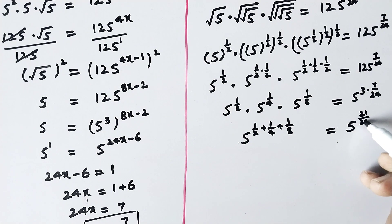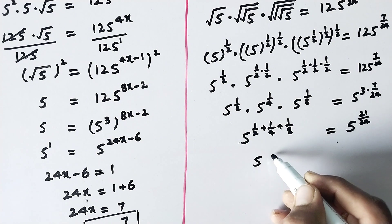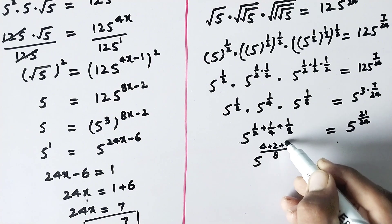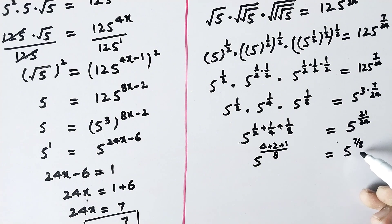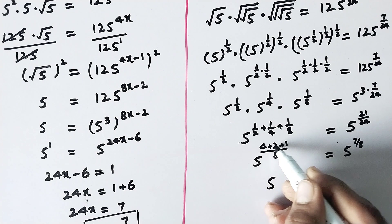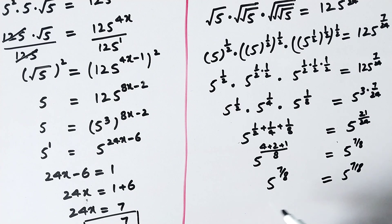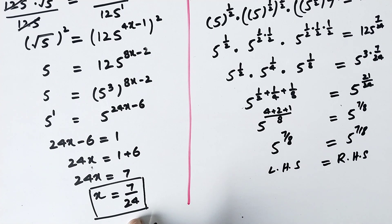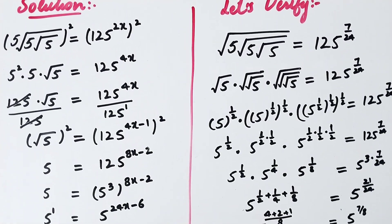Adding the powers on the left-hand side with LCD 8: 1/2 plus 1/4 plus 1/8 equals 4/8 plus 2/8 plus 1/8 equals 7/8. The right-hand side simplifies to 5 to the power 7/8 as well. Since the left-hand side equals the right-hand side, it is proved that x equals 7 over 24 is the correct answer. If you like the video, please hit the like button and subscribe to my channel for more videos. Thanks for watching, take care, bye.